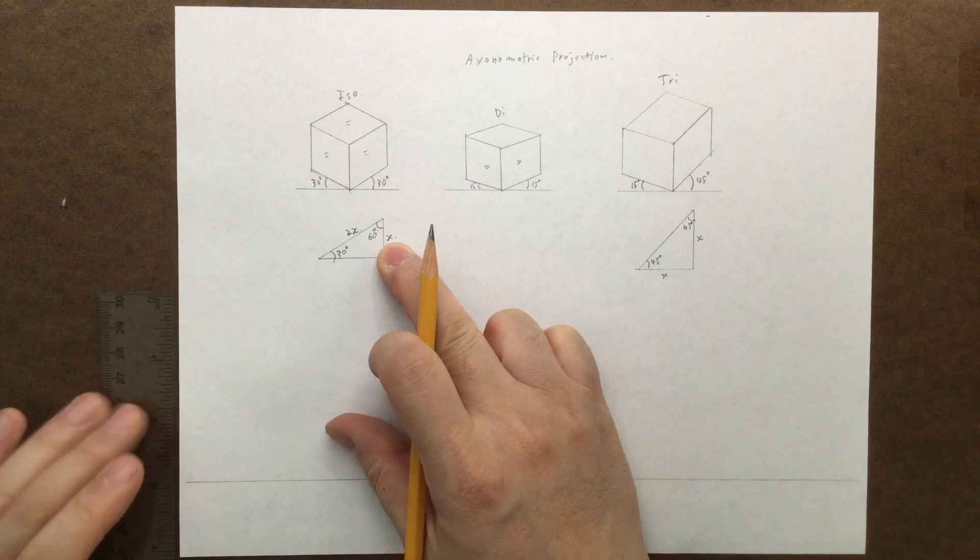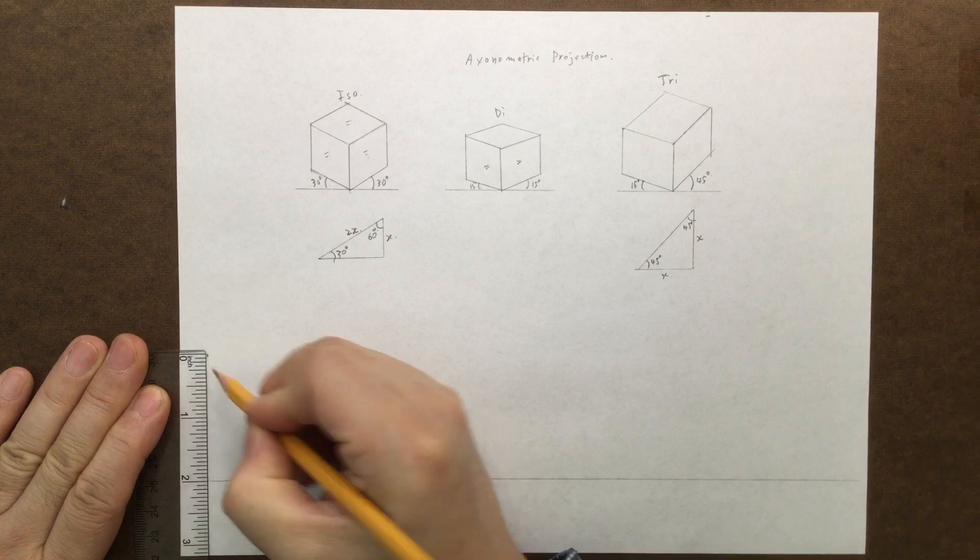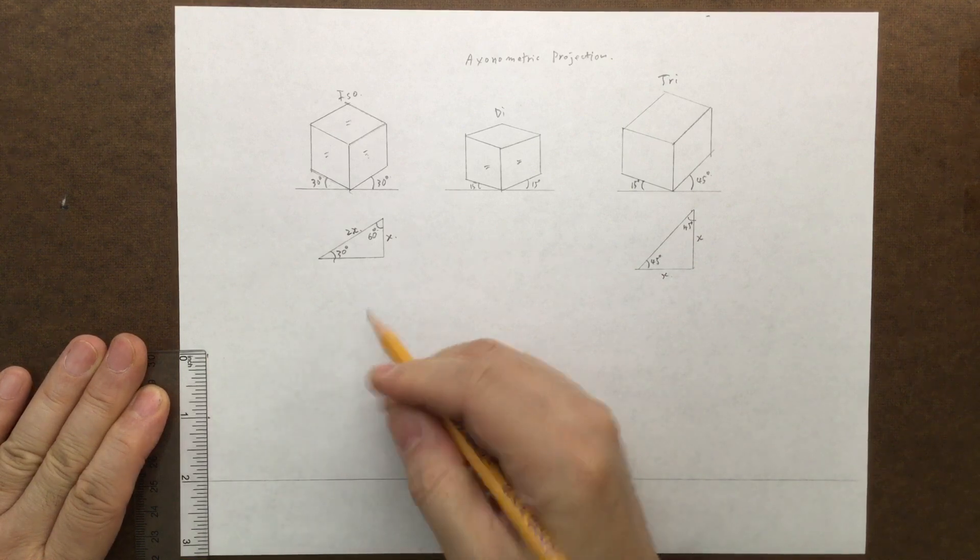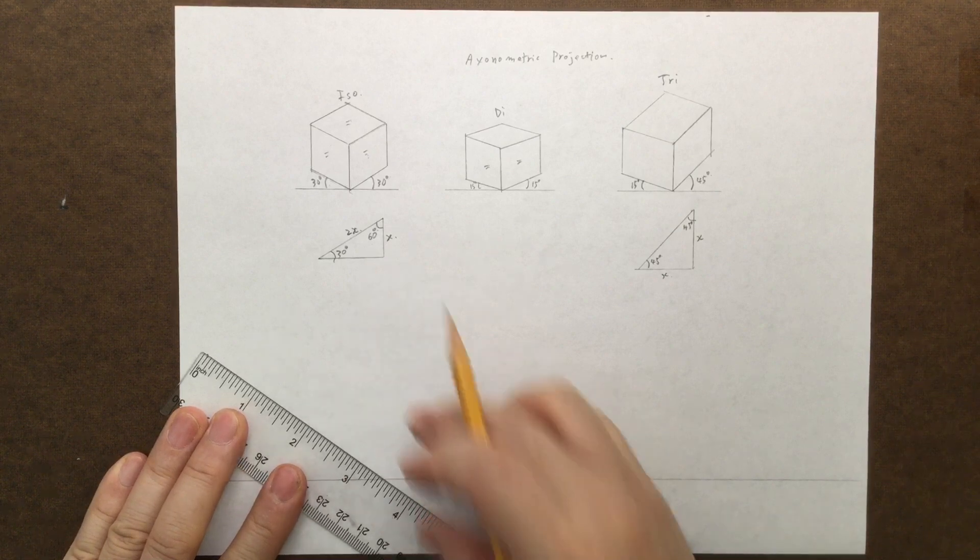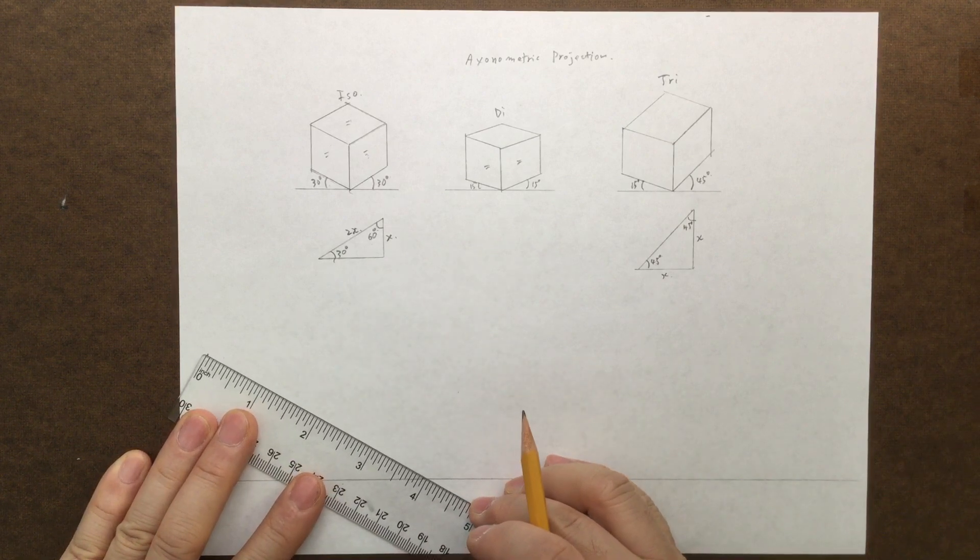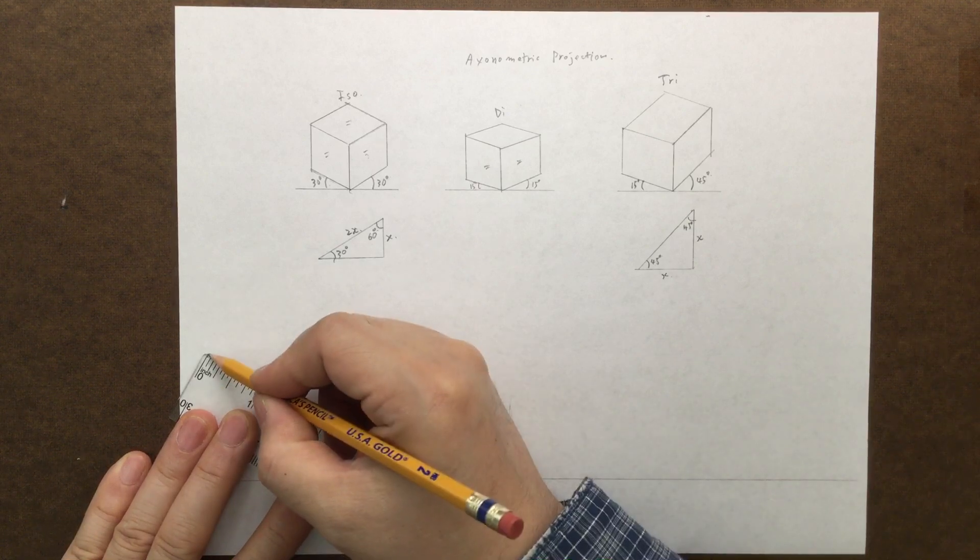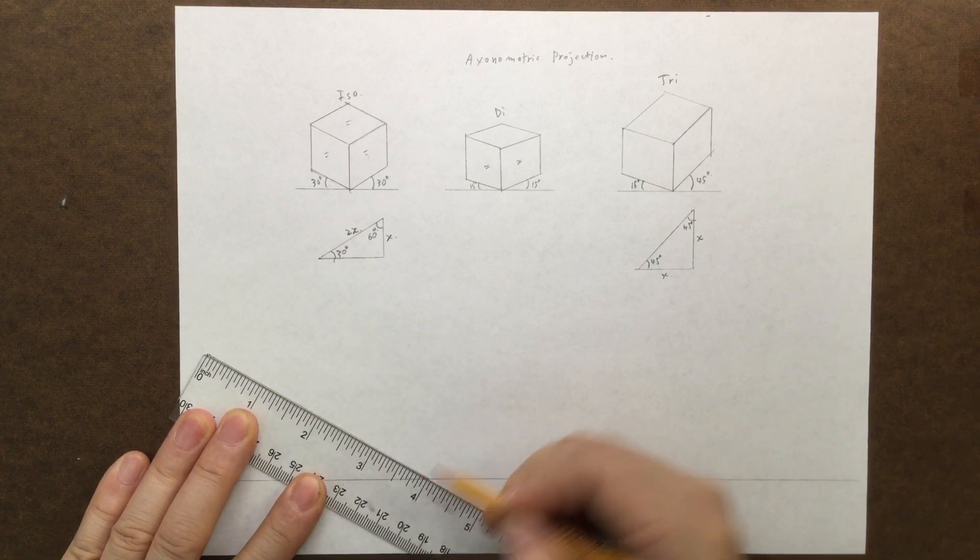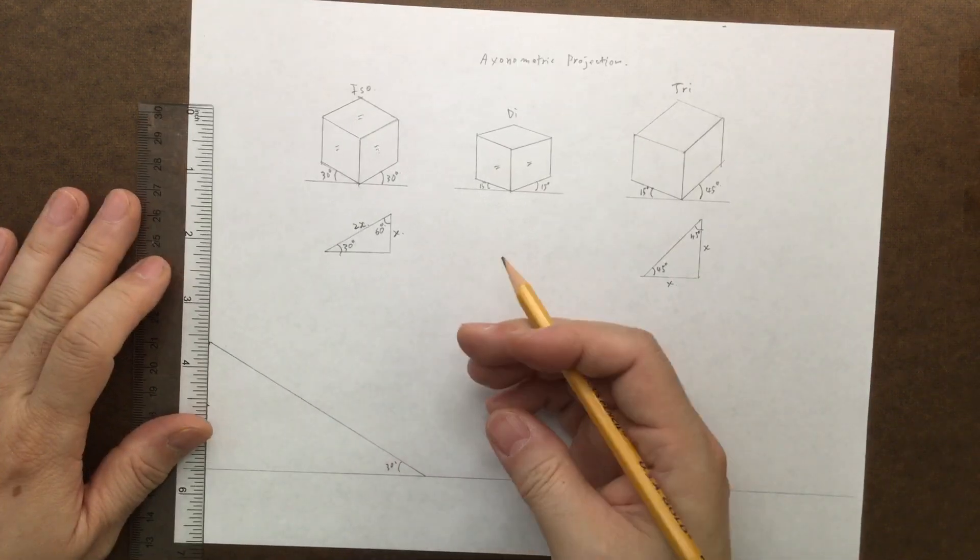Let's say you have a 2-inch mark here, and then all you have to do is find the 4-inch mark from that point. And then that's going to give you 30 degrees.